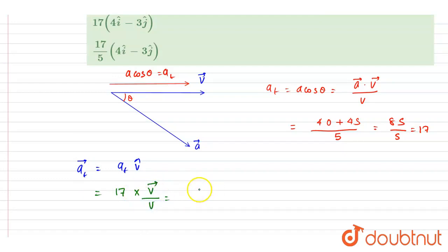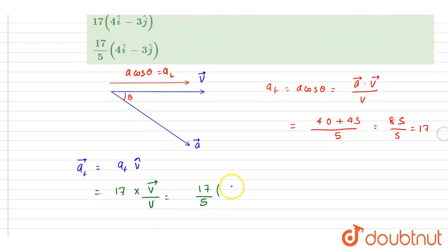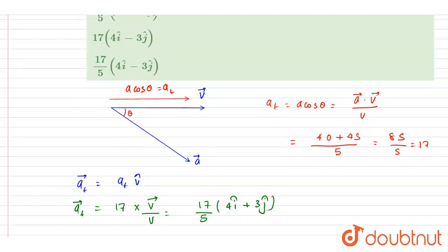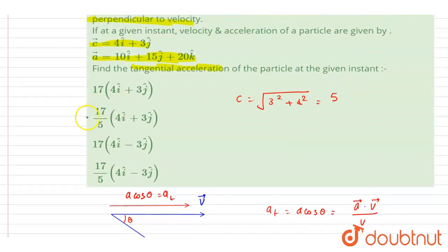So if you see, this is 5, and the direction you can see is 4 i cap plus 3 j cap. So this will be the tangential acceleration. Now you can check for the option: 17 by 5, 4 i cap plus 3 j cap. So b is the correct answer.